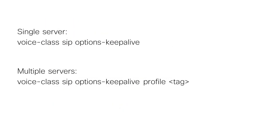So in summary, this is how the command voice class SIP options keepalive is used to monitor a single SIP endpoint or server, and voice class SIP options keepalive profile tag is used to monitor a group of SIP servers or endpoints. I hope this video has been useful. Thank you for watching.